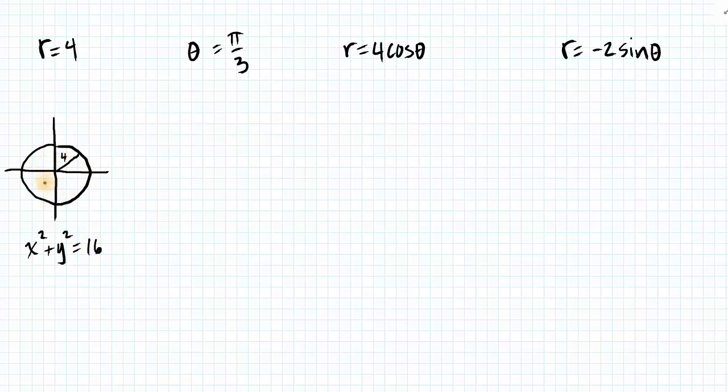You can do that intuitively. We know a circle of radius 4 centered at the origin is x squared plus y squared equals r squared. You could also square both sides and then replace r squared with what it's equal to, and that is x squared plus y squared.